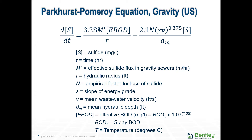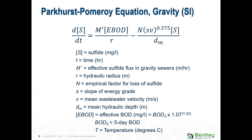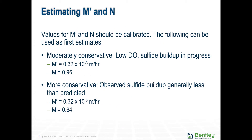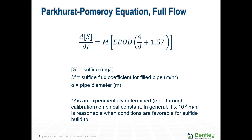Values of M and N should be calibrated. The values of M and N can be moderately conservative or more conservative depending on the occasion. The first term is modified to account for sulfide generation in the stream and assumes zero dissolved oxygen (DO) in the wastewater.